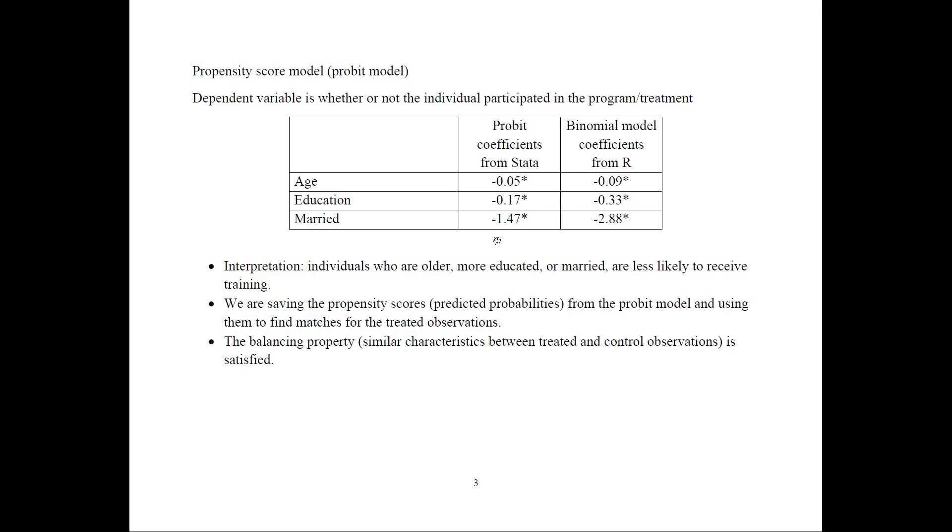The way you would interpret these is that individuals who are older, have higher education, or are married, they're less likely to receive the training. For some reason, I got different coefficients from the Stata and the R program. They're very consistent in interpretation, but they're different. So I'm not sure exactly which model R is estimating. We would save the propensity scores or the predicted probabilities from these binary models and use those to find matches for the treated observations in the next stage. One thing that you can also view in the output is that the balancing property or similar characteristics between the treated and controlled observations is satisfied.